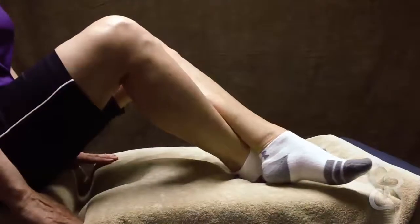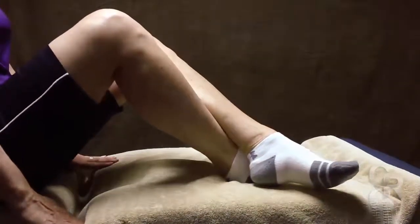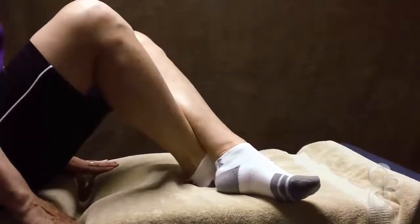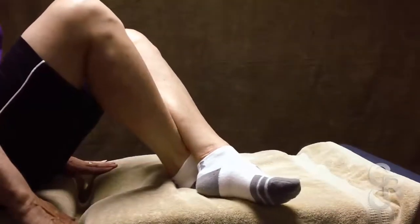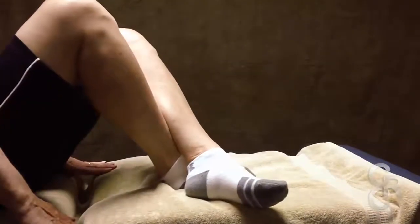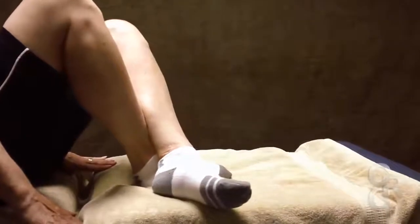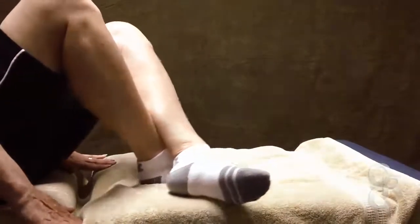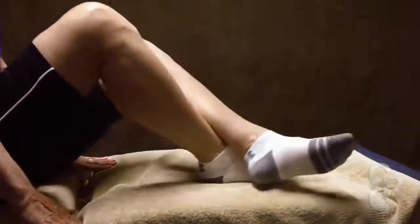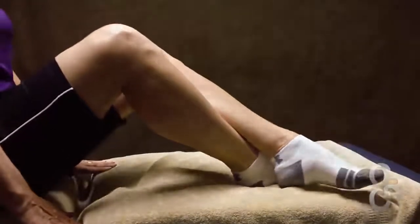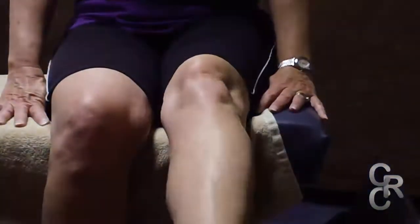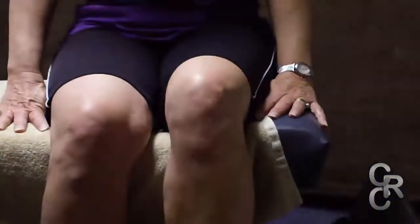Knee resistance exercises help the anterior lower leg, anterior thigh, and hamstrings. Cross your ankles while in the seated position. Resist with the bottom leg while pulling and dragging towards the buttocks with the top leg. Start with five repetitions and work up to 10 by two weeks. Sit so your feet are not resting on the floor.